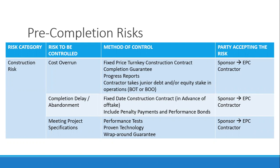There are three specific areas of construction risk. First is cost overrun — exceeding the budget. Second is completion delay or abandonment. Third is meeting project specifications — you might have a plant within budget and delivered on time, but it's not able to meet project specifications, meaning the water coming out is not clean.